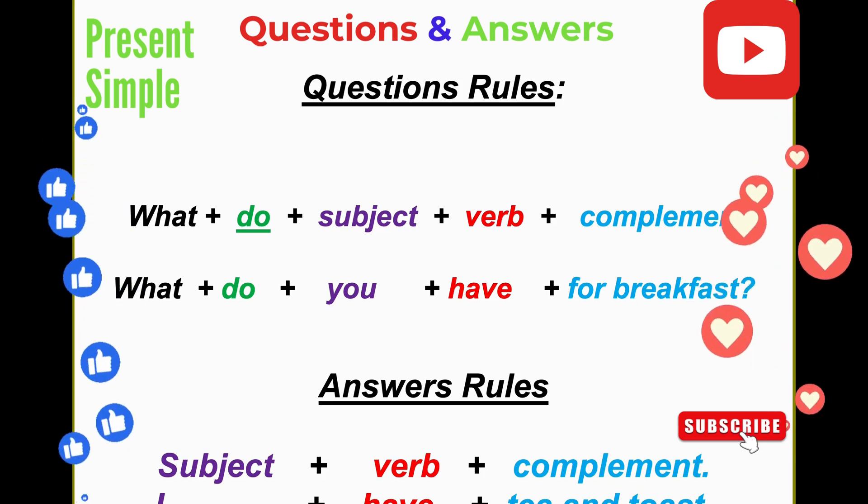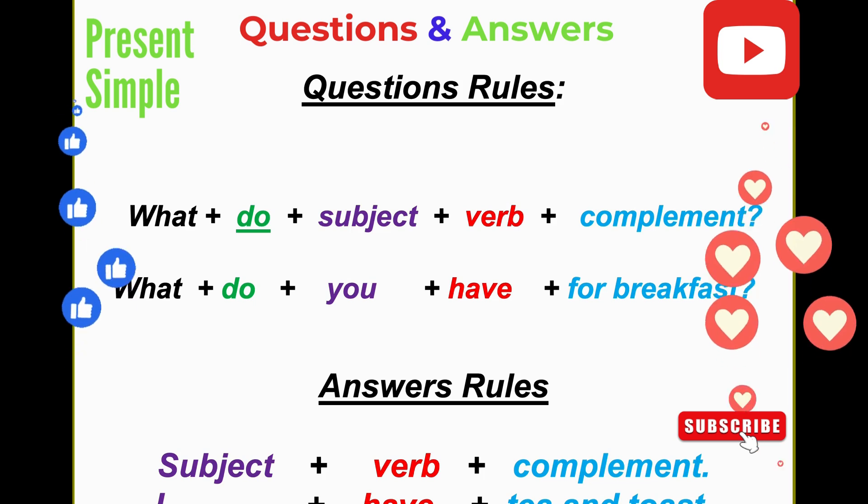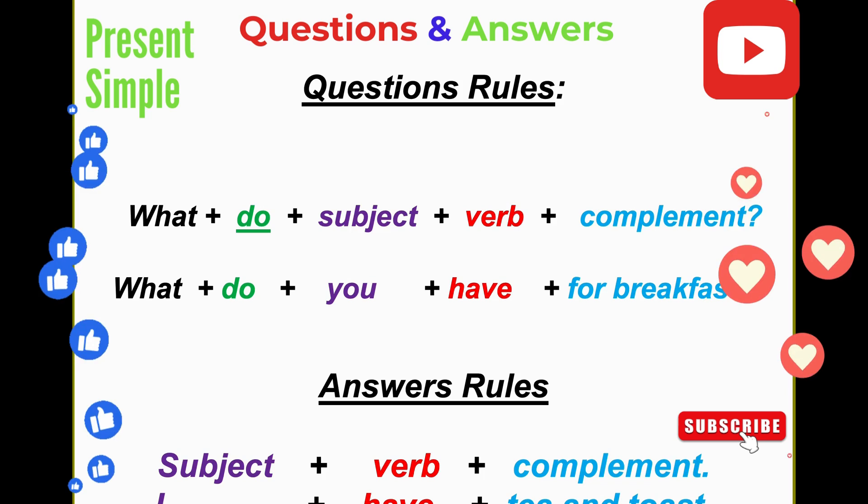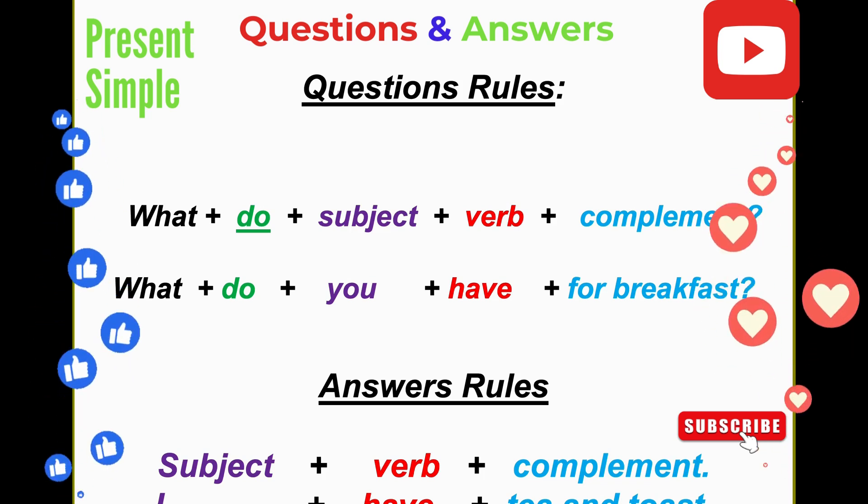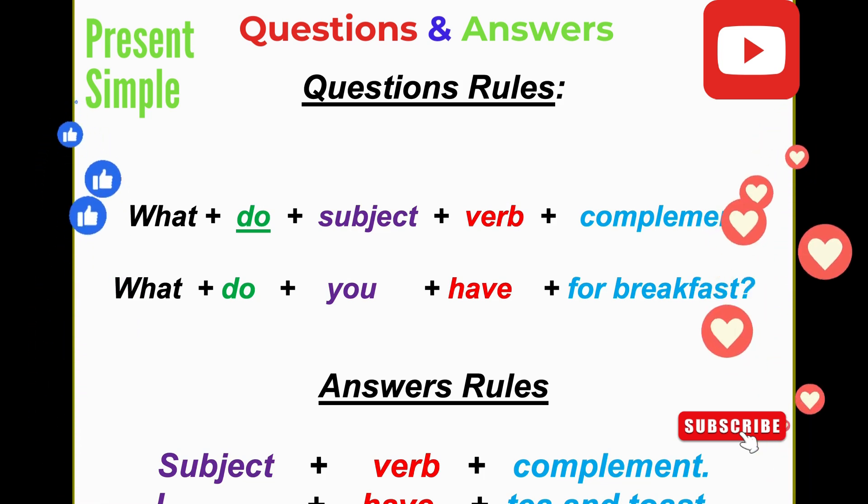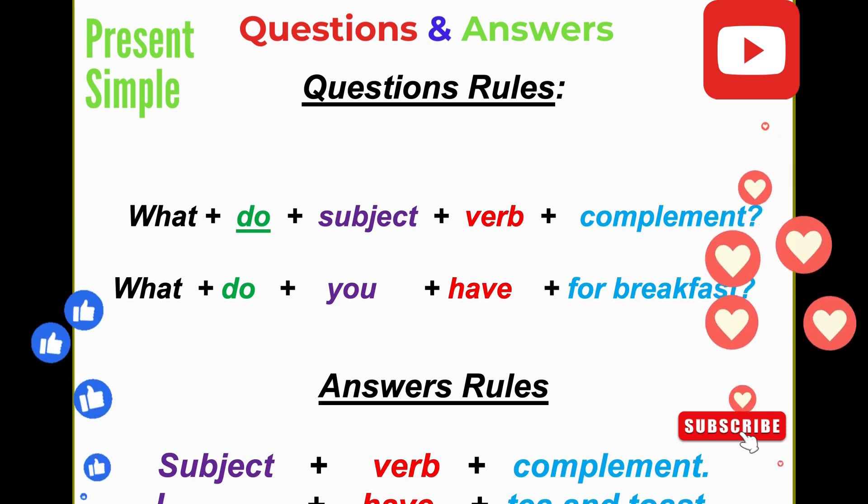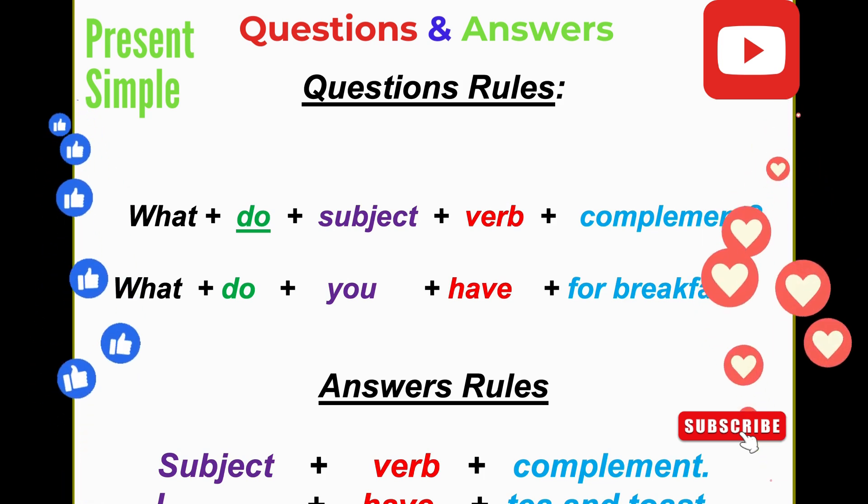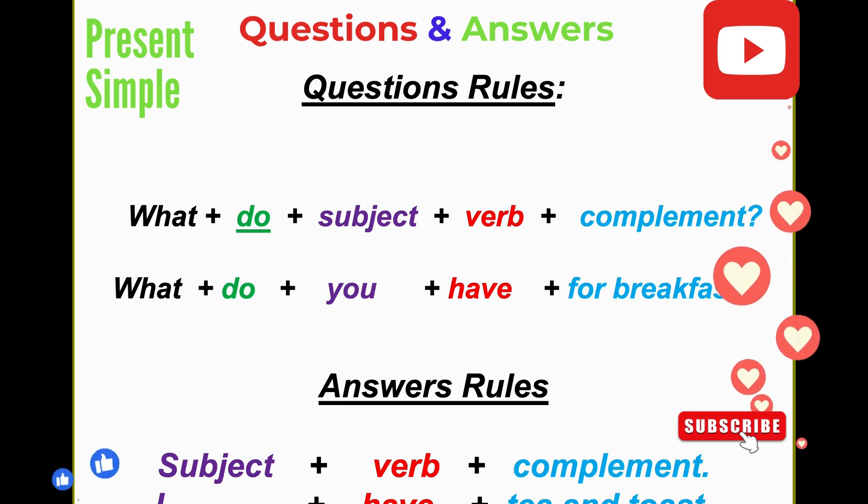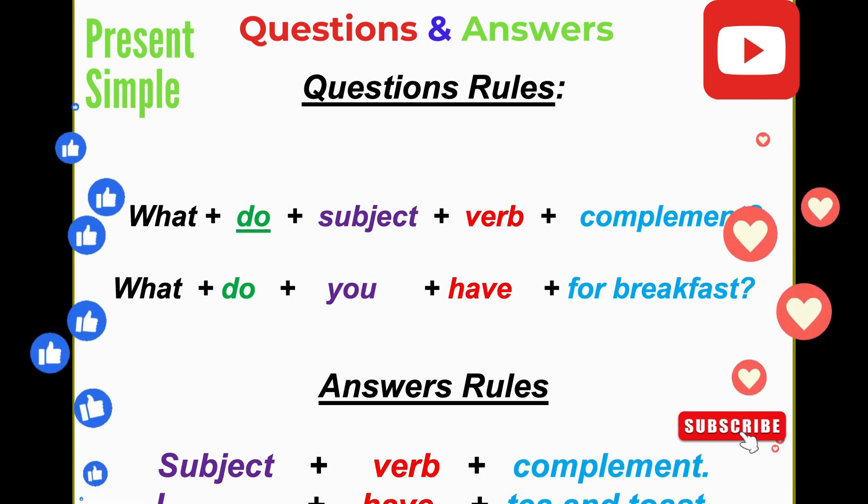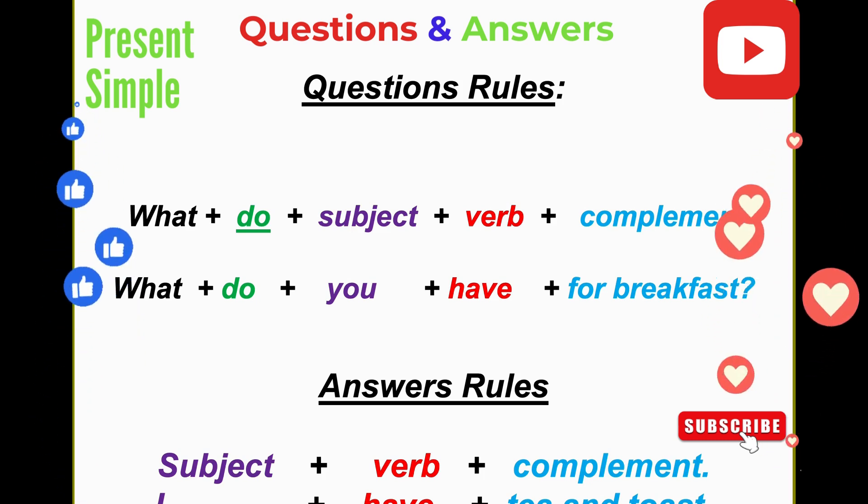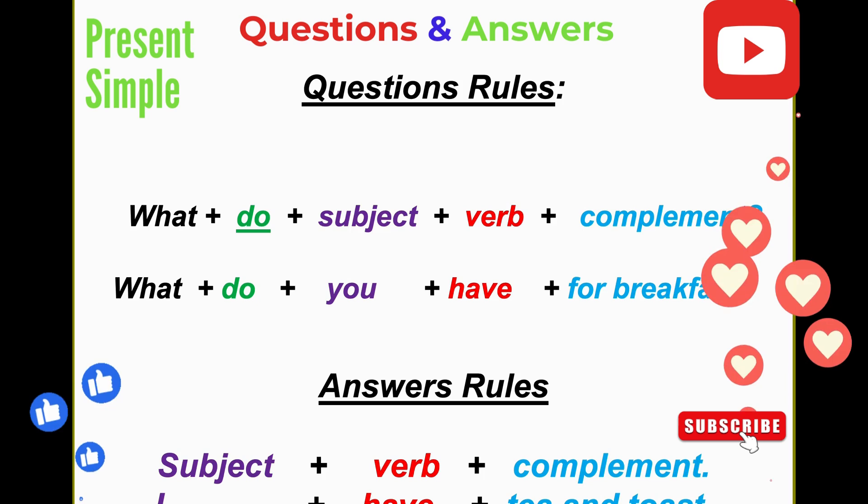The first word is what, how, or where - a WH word. Why do we call them WH words? Because 90% of them start with WH, with the exception of how, which starts just with H. All the other words start with WH.